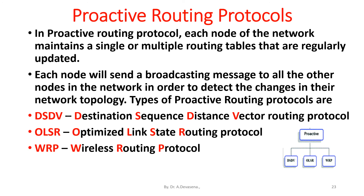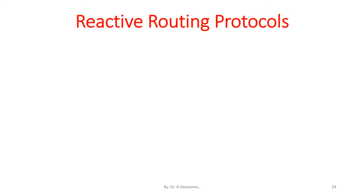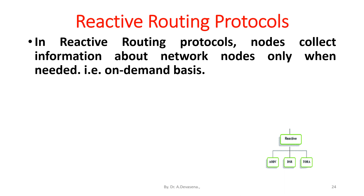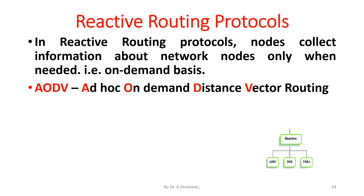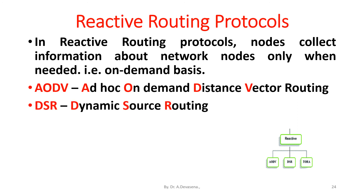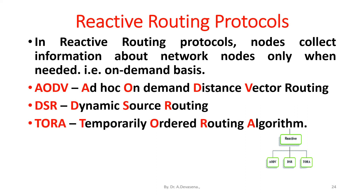Reactive routing protocols: in reactive routing protocols, nodes collect information about network nodes only when needed, i.e., on-demand basis. The types of reactive routing protocols include AODV (Ad hoc On-Demand Distance Vector routing), DSR (Dynamic Source Routing), and TORA (Temporarily Ordered Routing Algorithm).